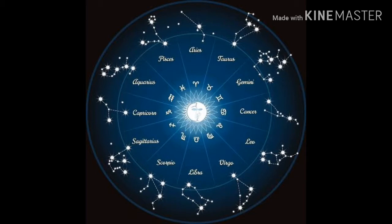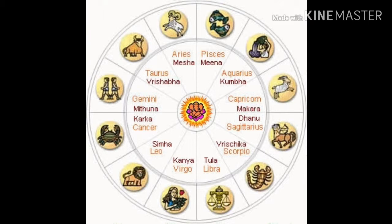This is how the zodiac belt looks. The first sign is Aries, also known in Hindi as Mesh. The second sign is Taurus, also known as Vrushab. Third is Gemini, also known as Mithun. Fourth is Cancer, also known as Karka. Fifth is Leo, also known as Simha. Sixth is Virgo, also known as Kanya. Seventh is Libra, also known as Tula. Eighth is Scorpio, also known as Vrishik. Ninth is Sagittarius, also known as Dhanu. Tenth is Capricorn, also known as Makar. Eleventh is Aquarius, also known as Kumbha. And the twelfth sign is Pisces, also known as Meen.